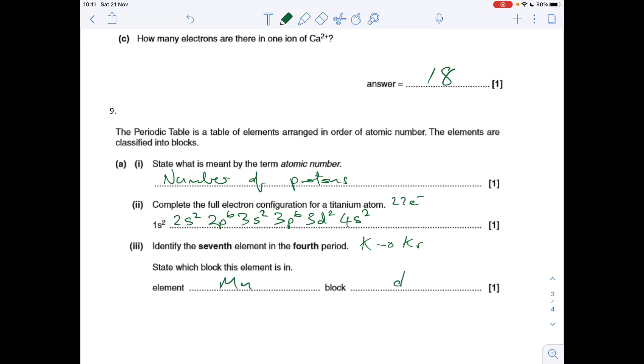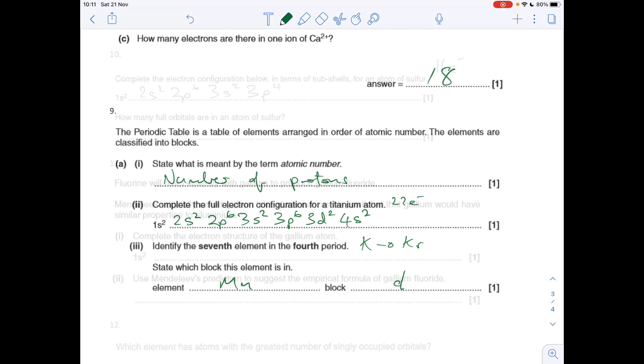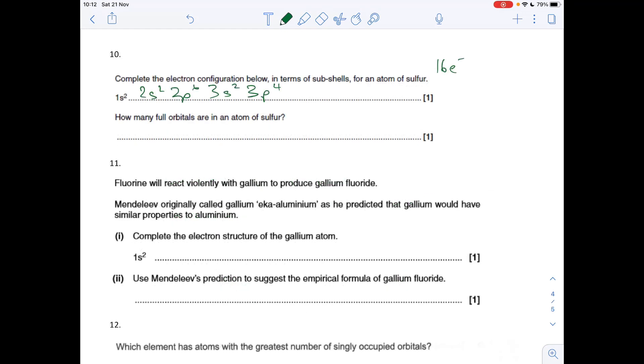Question 10: sulfur. An atom of sulfur's got 16 electrons, so there's its electron structure there. We'll use what we've got for the first part to answer the second part. How many full orbitals are there in an atom of sulfur?